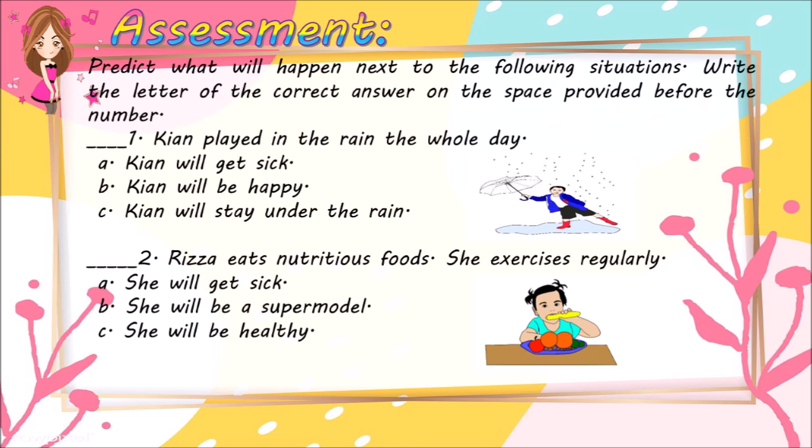Number 2: Riza eats nutritious foods. She exercises regularly. A. She will get sick. B. She will be a supermodel. C. She will be healthy.